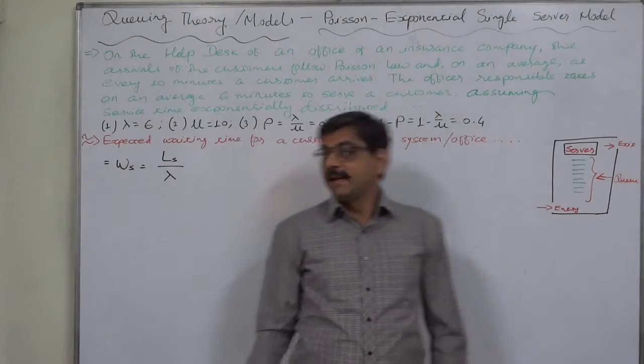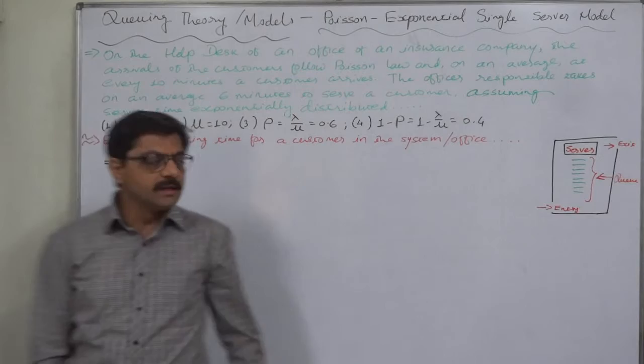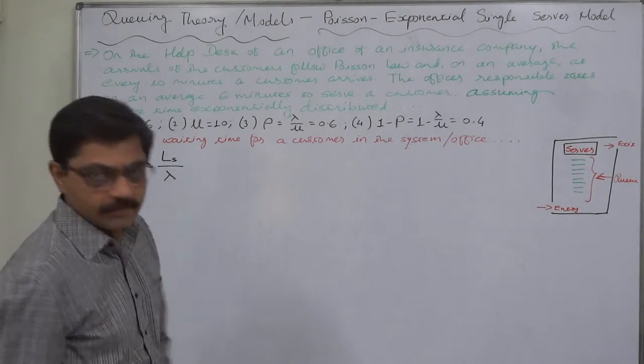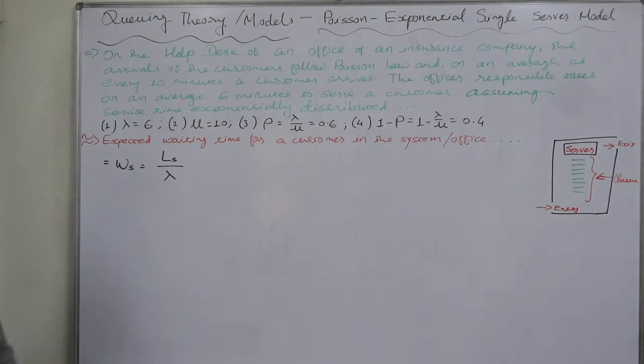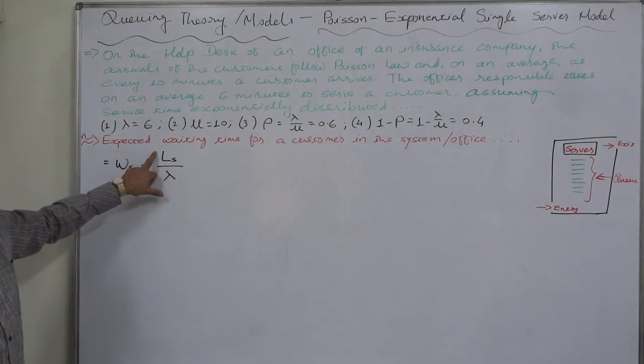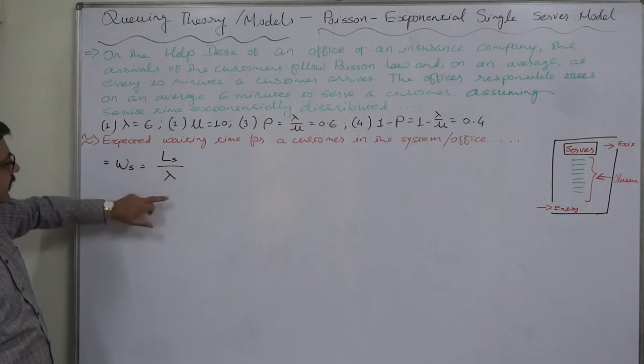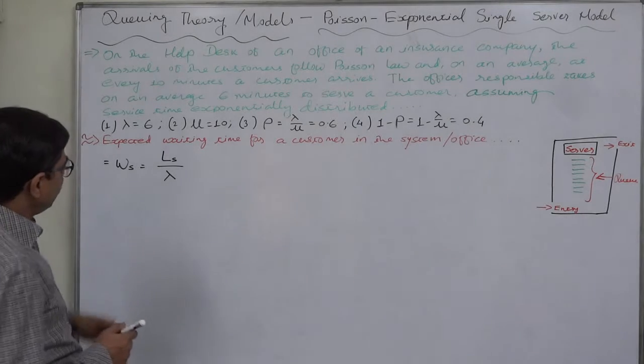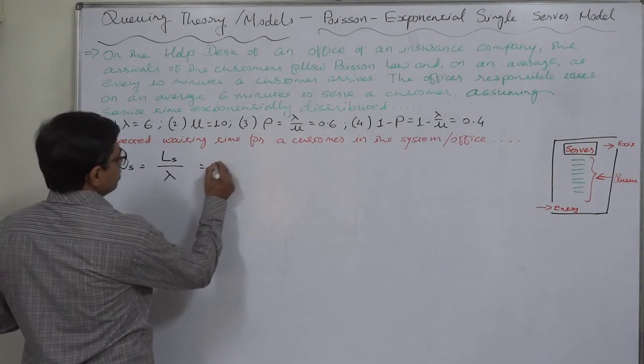Hello and welcome. Now let us calculate the expected waiting time for a customer in the system, WS. The logic of the formula is expected number of customers in the system divided by arrival rate. What is the formula for expected number of customers in the system?